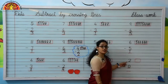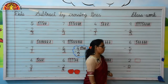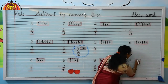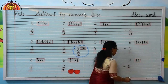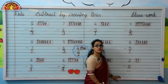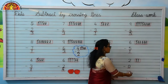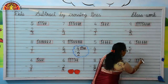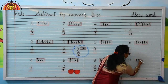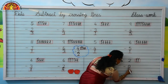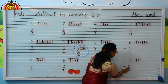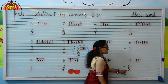Kids, which number is written here? 2. Draw 2 lines. The downside is 0. 0 means nothing. So kids, let's count the lines: 1, 2. Kids, write 2. The answer is the number itself, like this.